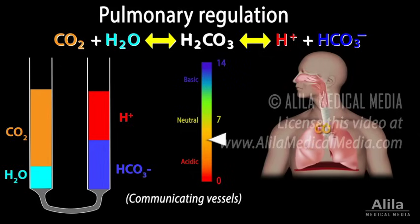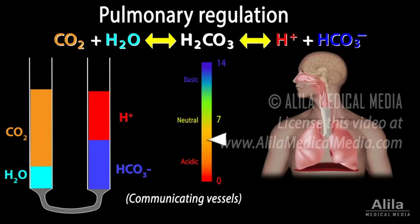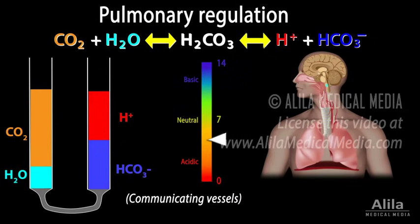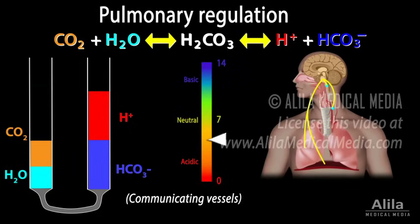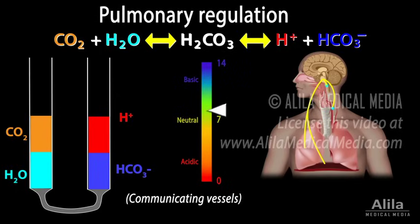The first mechanism is elimination of carbon dioxide through exhalation. The amount of carbon dioxide exhaled by the lungs is regulated in response to changes in acidity. A decrease in pH is sensed by central or arterial chemoreceptors and leads to deeper, faster breathing. More carbon dioxide is exhaled, less hydrogen is made, blood acidity decreases, and blood pH returns to normal.